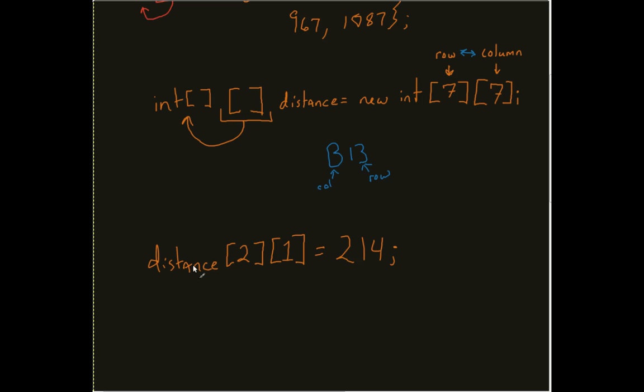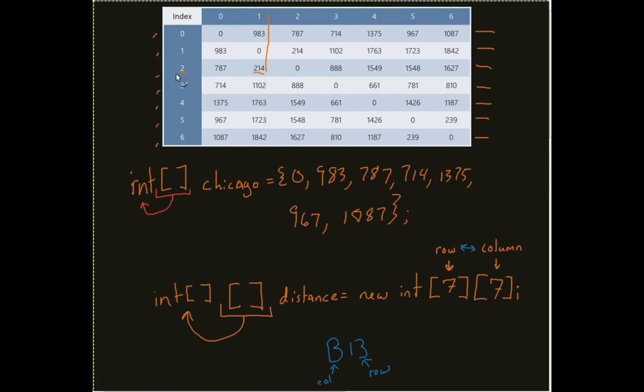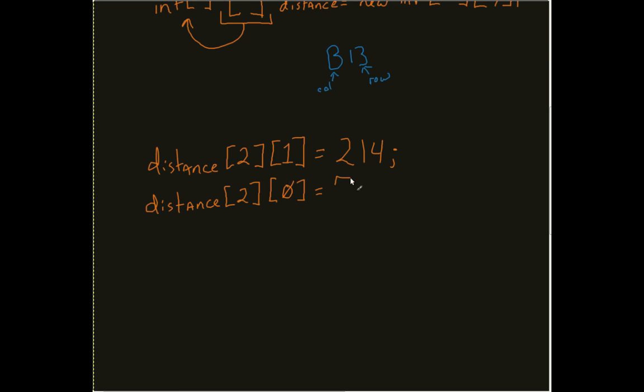And I could do that with every single one of my elements. If I wanted to come in here and do it for two, zero—again, if we just look up at that table, two, zero, row two, column zero, which is 787—I would come in here and just pass that number in.